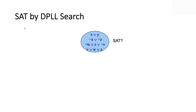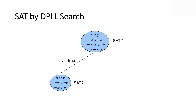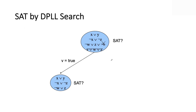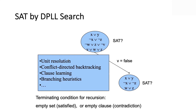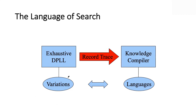Let's contrast DPLL versus exhaustive DPLL. DPLL does a depth search: you give it a formula, say 'is it satisfiable?', you pick a variable, set its value, that simplifies the formula, and you keep going. If it ends up being SAT, you're done. If not, you try the other value and get a simpler residual formula. Termination conditions include unit resolution to discover contradictions early, conflict-directed backtracking, clause learning, and branching heuristics.